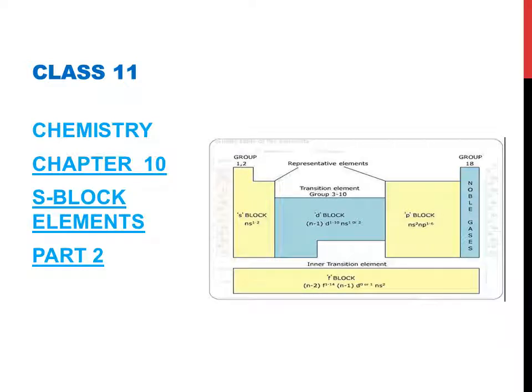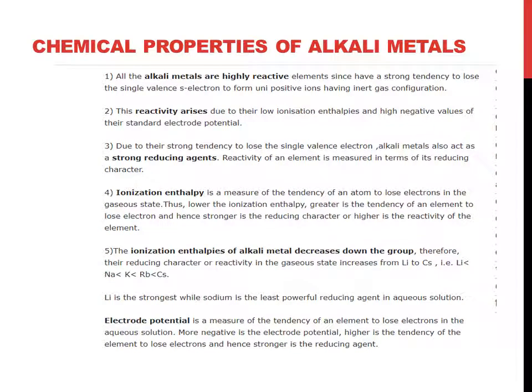Good morning students. Today we are going to start the second part of S-block elements, starting with chemical properties of alkali metals. All alkali metals are highly reactive elements since they have a strong tendency to lose the single valence S electron to form unipositive ions having inert gas configuration. This reactivity arises due to their low ionization enthalpies and high negative value of their standard electrode potential.